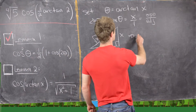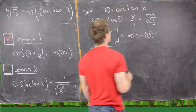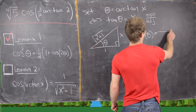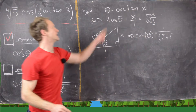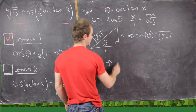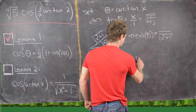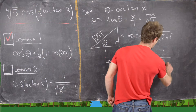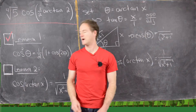It follows immediately that taking the cosine of θ gives us the adjacent over the hypotenuse, which is one over the square root of x squared plus one. Since θ equals arctan of x, we replace θ to get cosine of arctan x equals one over the square root of x squared plus one. That finishes the proof of Lemma 2.